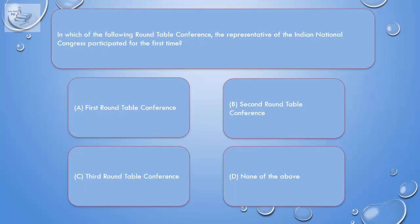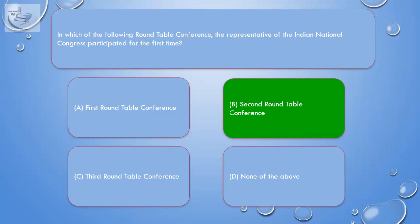Question: In which of the following Round Table Conferences did the representative of the Indian National Congress participate for the first time? A. First Round Table Conference, B. Second Round Table Conference, C. Third Round Table Conference, D. None of the above. Correct answer is B. Second Round Table Conference.